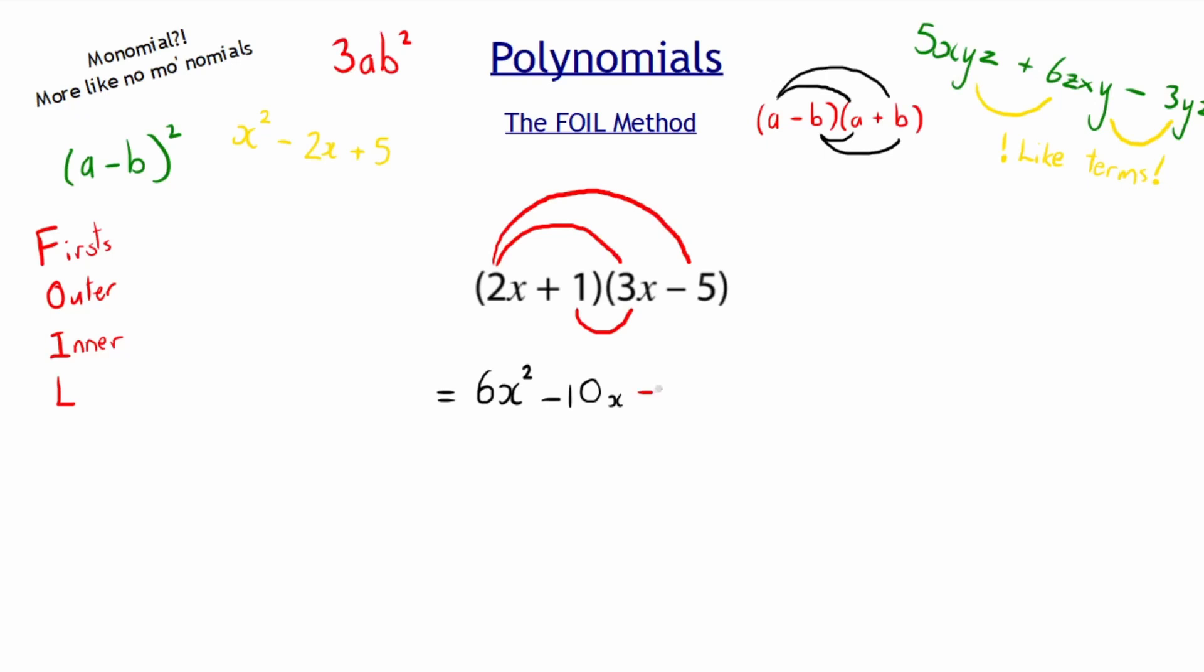Then lastly, L is also the last. We must multiply the last term of each bracket. So plus 1 multiplied by negative 5 is negative 5. So we can simplify this one last time: 6x squared, and we have like terms here in the middle, negative 10x plus 3x, which is negative 7x, and we have our constant of negative 5 still there. And that is our final answer.